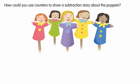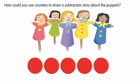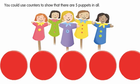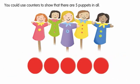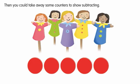How could you use counters to show a subtraction story about the puppets? You could use counters to show that there are five puppets in all. Then you could take away some counters to show subtracting.